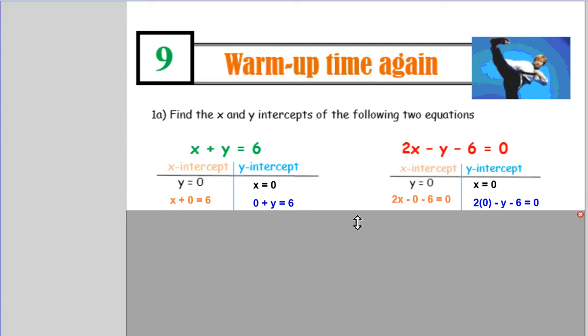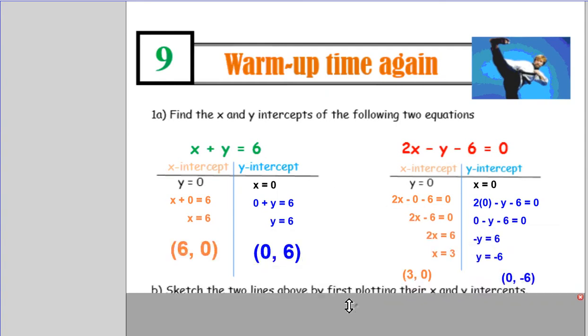Hopefully you've paused and you've tried it yourself first. Now you can check your working out. Hopefully you've got six zero for the x-intercept and zero six for the y-intercept.